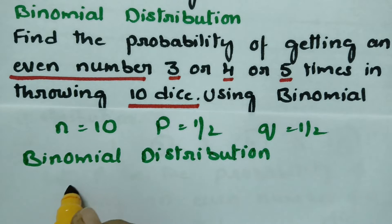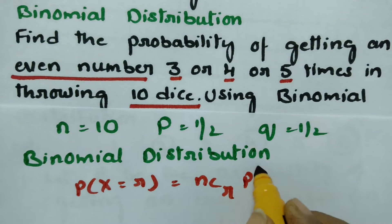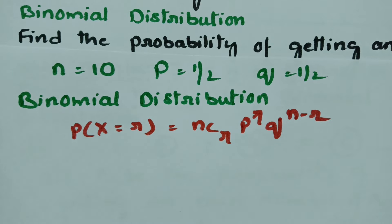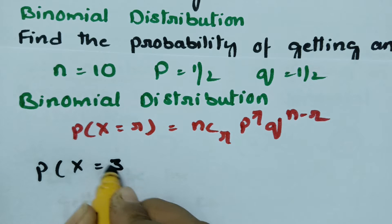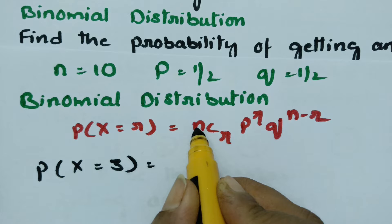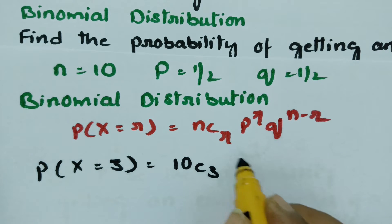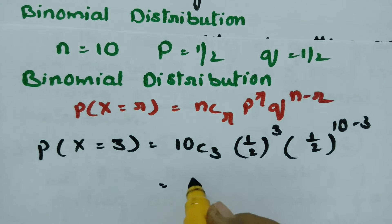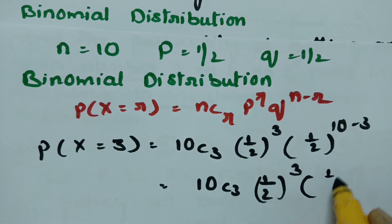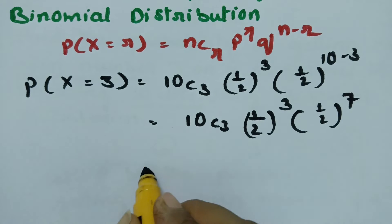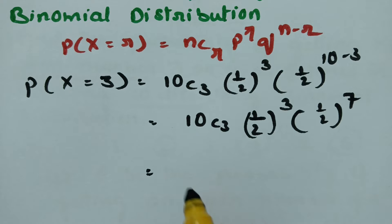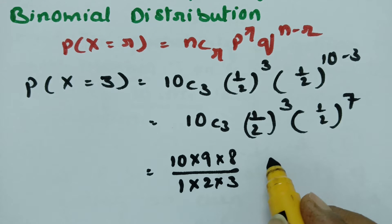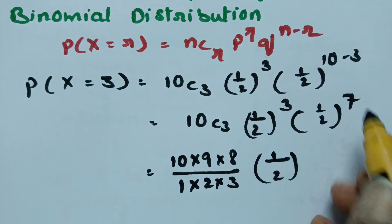According to the binomial distribution formula, P(X = r) = nCr × p^r × q^(n−r). For r = 3, with n = 10, this becomes 10C3 × (1/2)^3 × (1/2)^7. Now 10C3 equals 10 × 9 × 8 divided by 1 × 2 × 3, taking three backward steps — this is a shortcut.